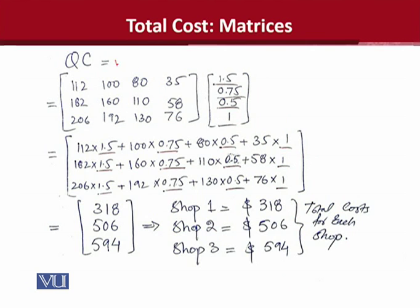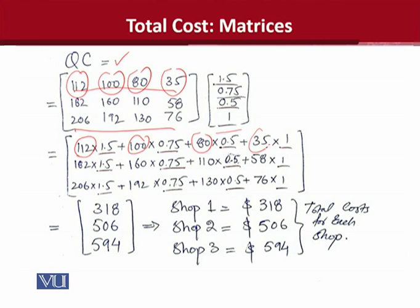Now Q into C is what we are trying to do. And we will write Q value and then we will write C value. And now what we are trying to do is to develop that structure. This is our first row and this is our column. So you can see the first row we are using: 112, the second element is 100, the third element is 80, and the fourth element is 35. And we are multiplying with the other matrix, which is a column vector: 1.5 is the first value, then the second element is 0.75, then the third element is 0.5, and then the fourth element is 1.